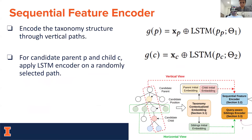In the following two modules, we further leverage structural information from the taxonomy from both a vertical and a horizontal view. In the sequential feature encoder, we utilize structure information from the vertical view, encoding the taxonomy structure through vertical paths randomly selected from the taxonomy given the candidate positions. For example, the yellow node and red node are the candidate parent and candidate child positions. We randomly select a path containing both nodes and apply an LSTM encoder to generate embeddings from the vertical view.